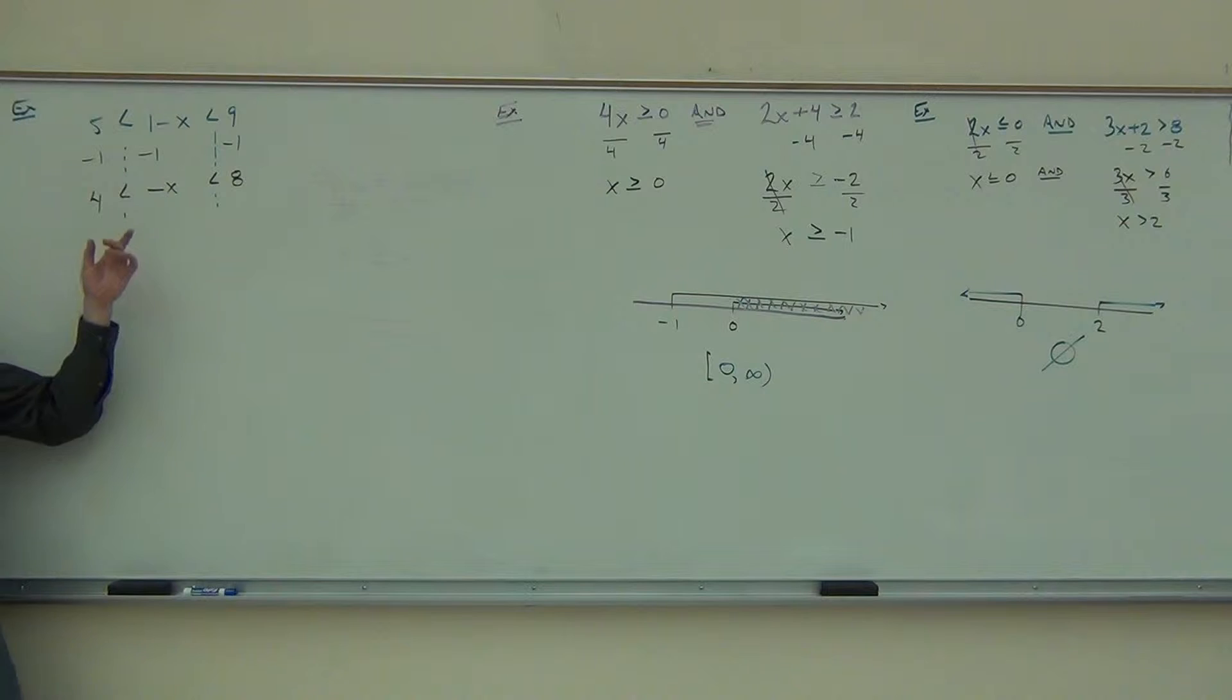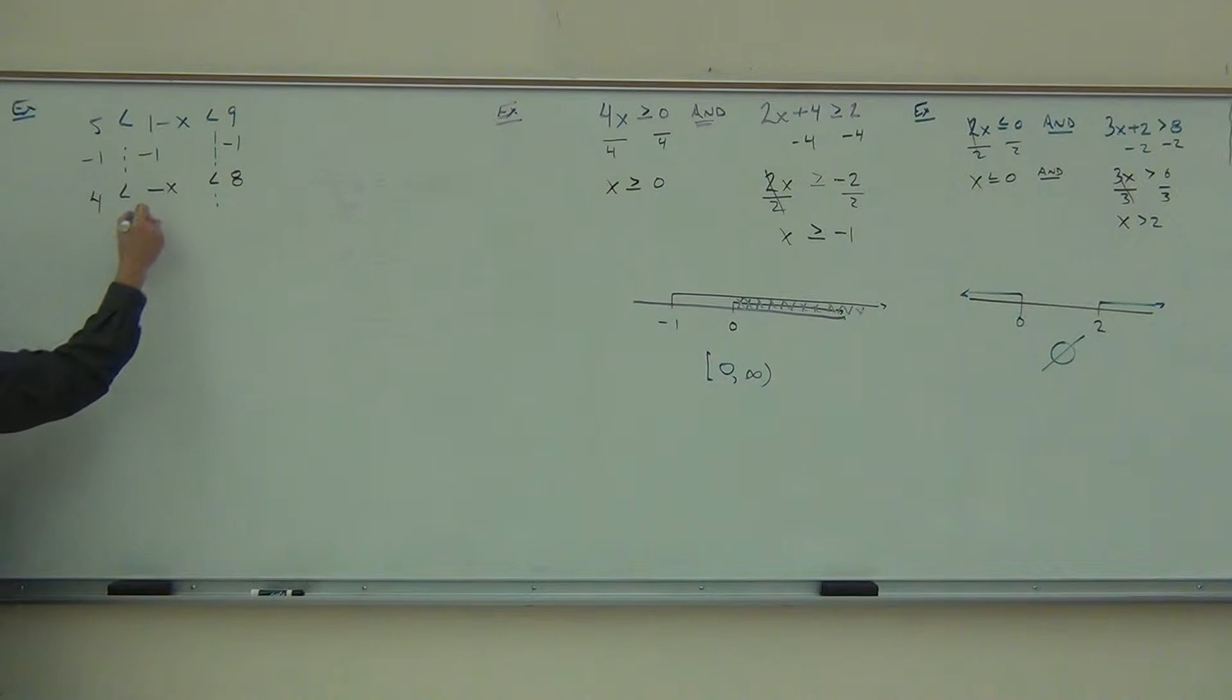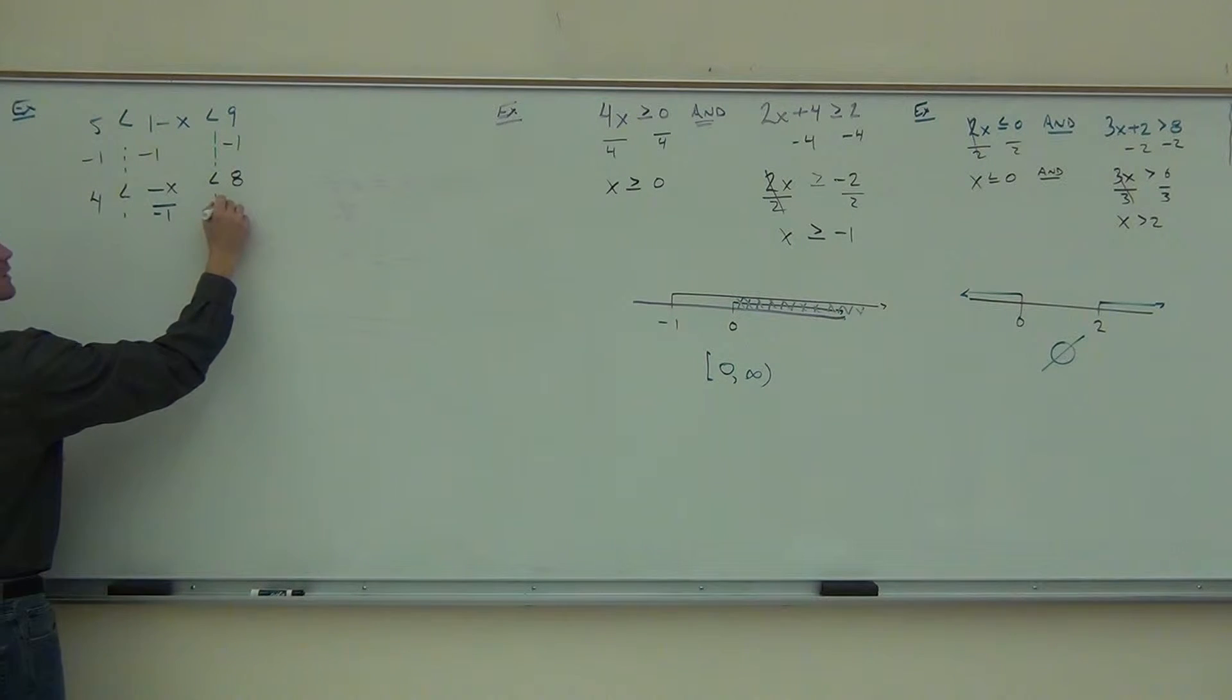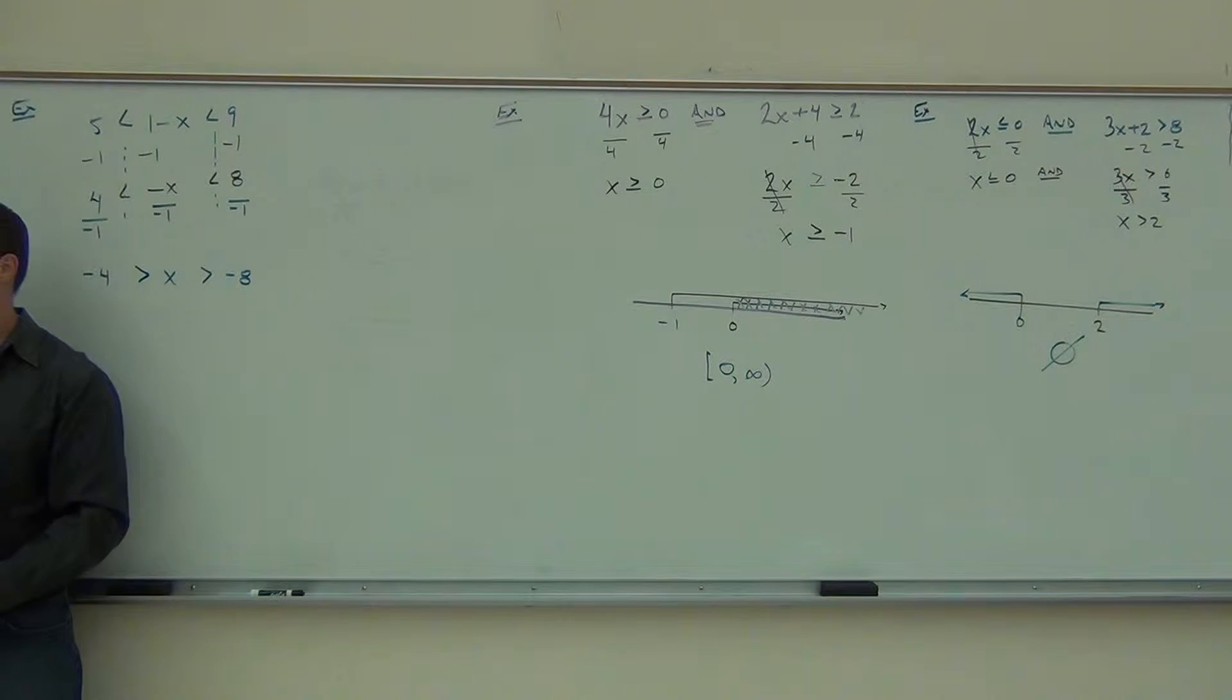Now, is this what I'm looking for? Do I want negative x? No. How do I get rid of that negative? Divide by negative one. Aha. So, if I divide by negative one, I do it here and here and here. I do get negative four. I do get x. And I do get negative eight. But, since I divided by negative, can you tell me what's happening to these signs? They're not going to be facing this way anymore. They'll be facing this way. You okay with that so far?